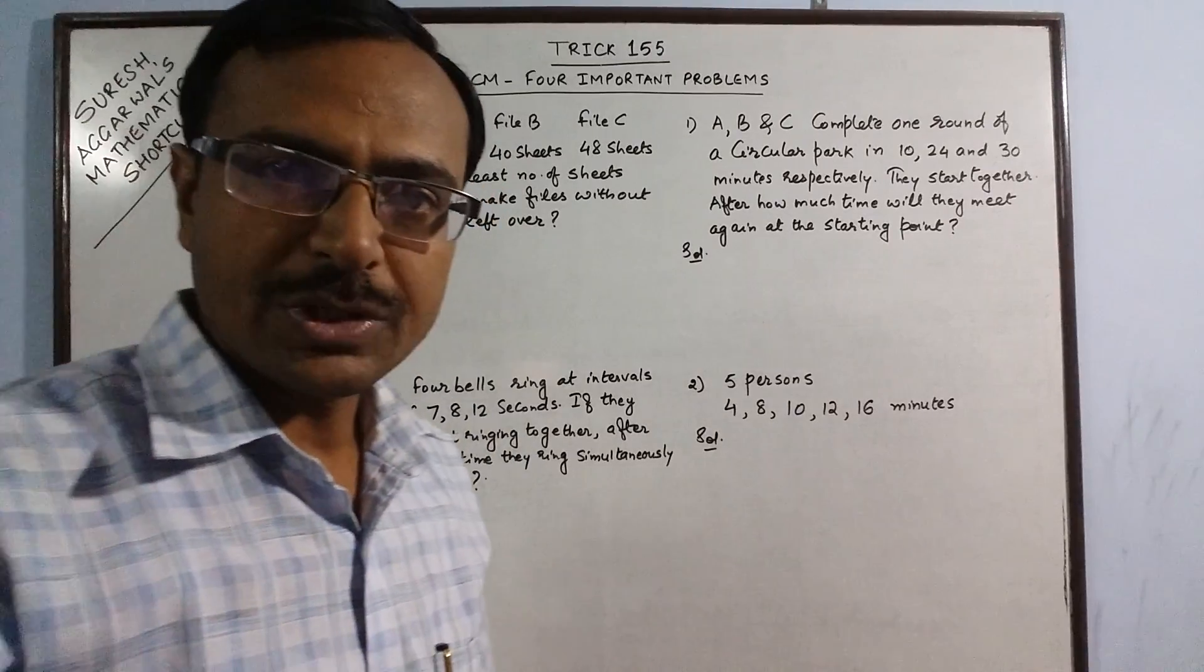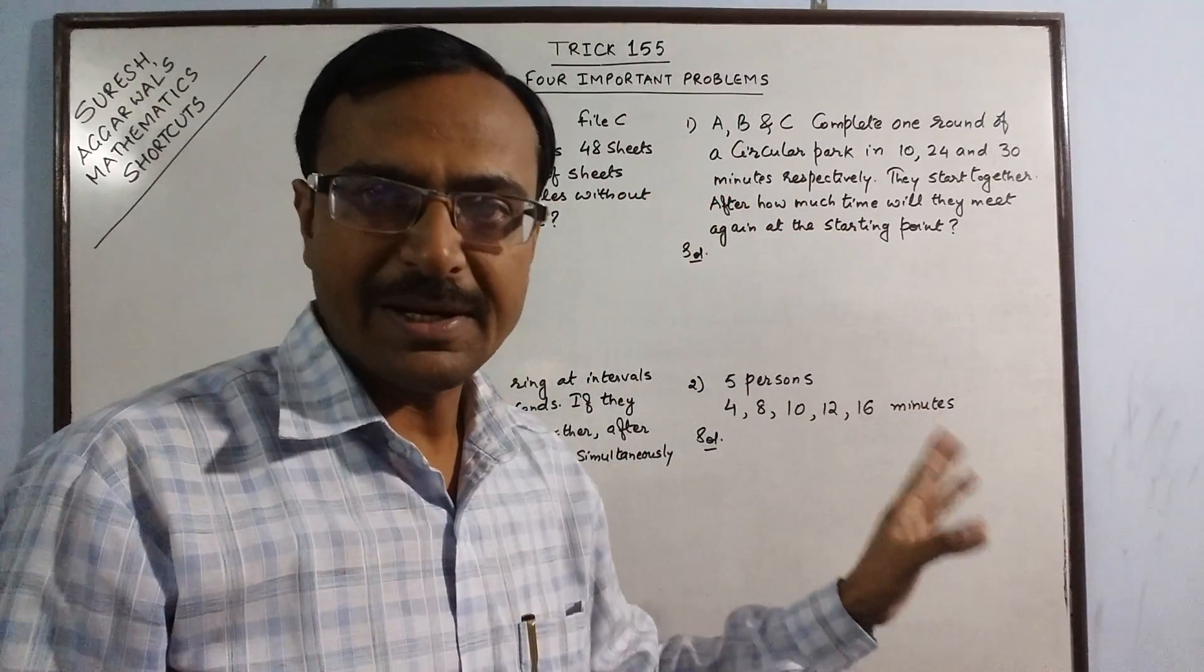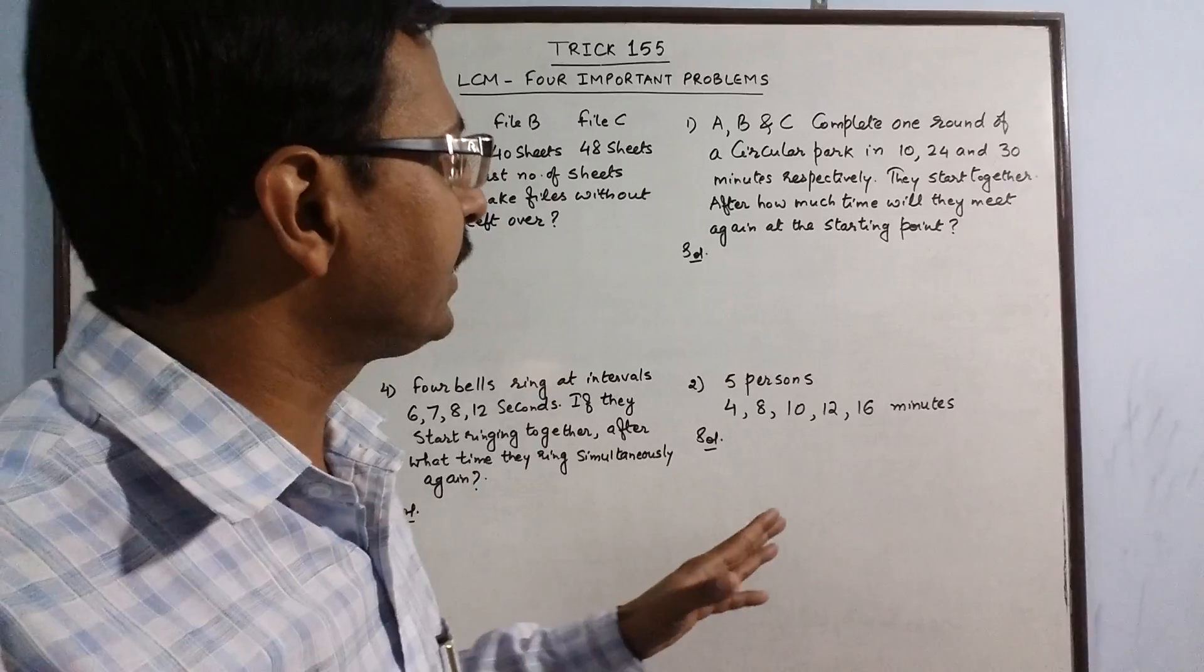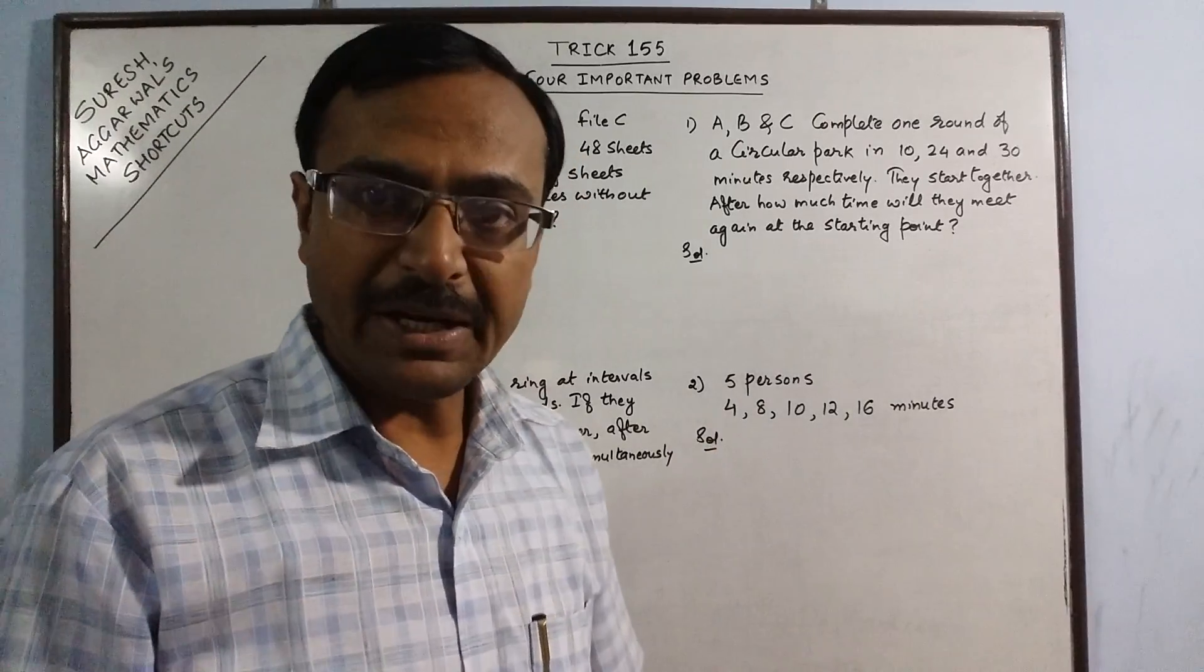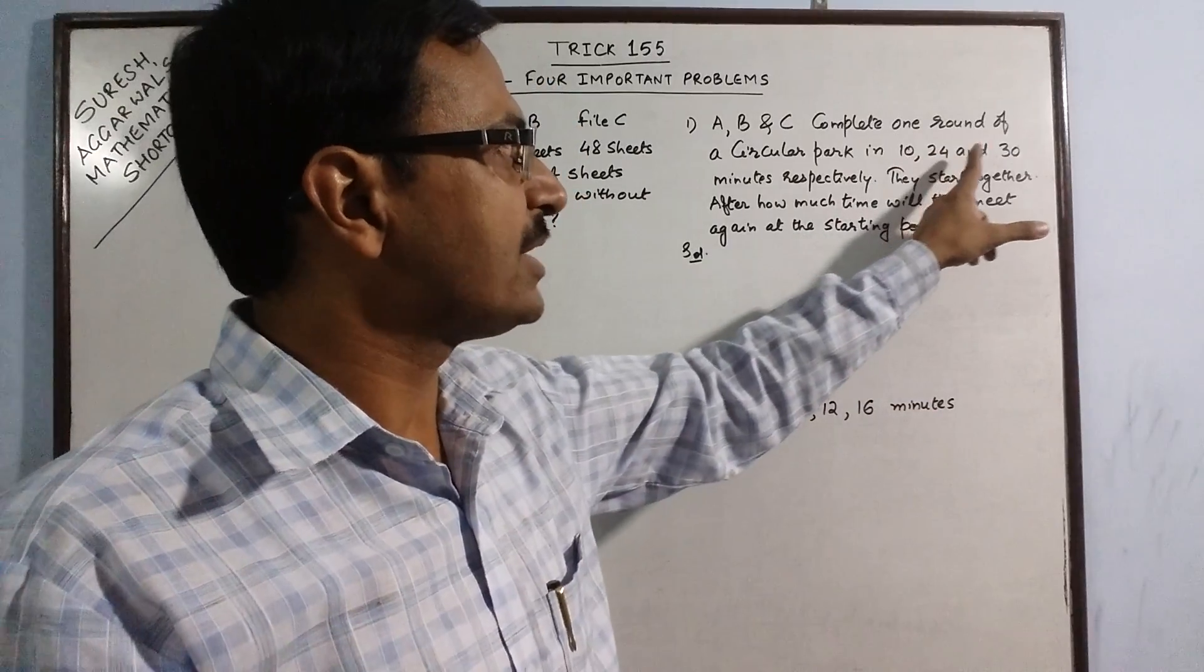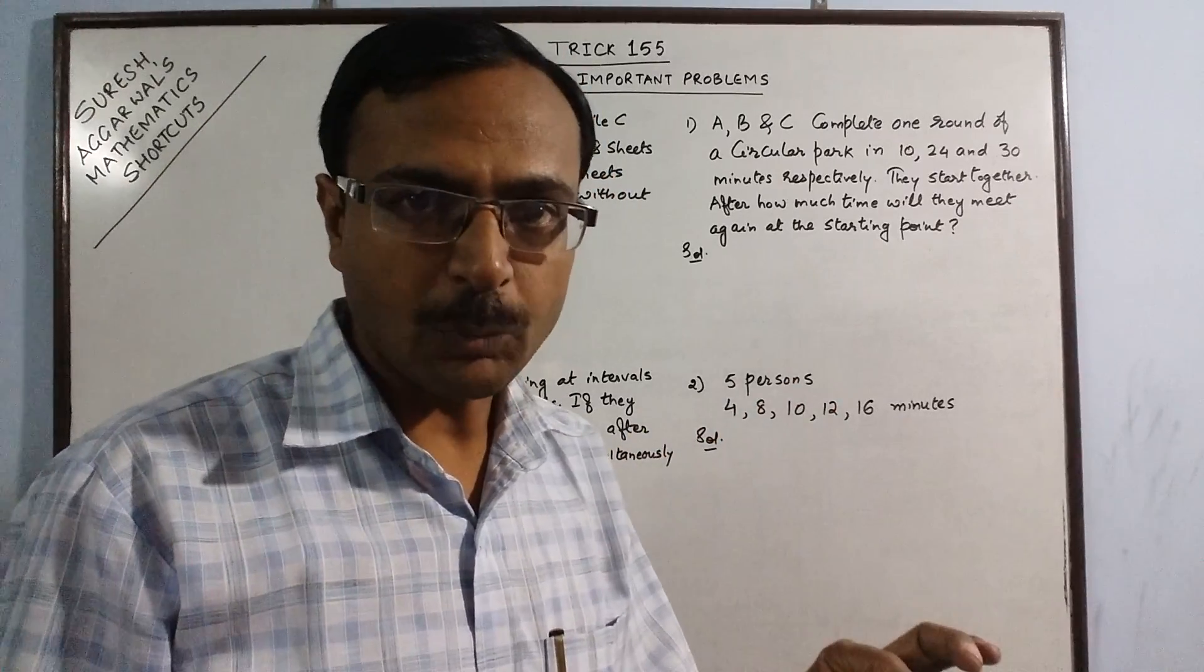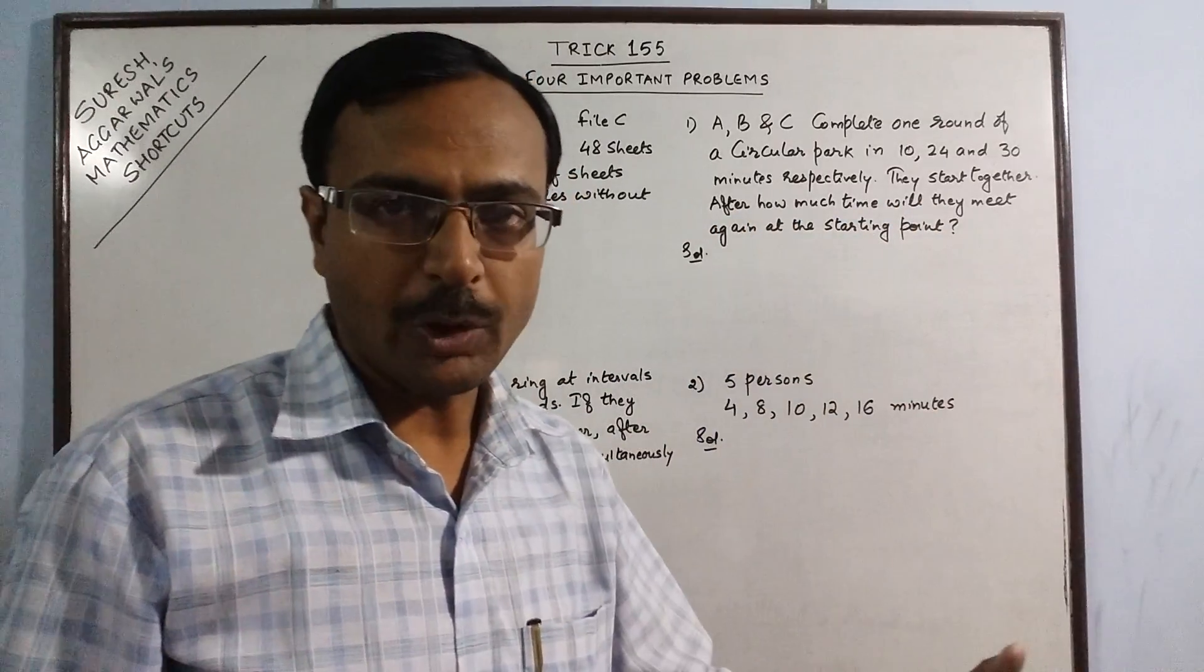The first problem I am going to take is there are three persons A, B, and C walking around a circular park. The time taken by the persons to complete one round of the circular park is given: 10 minutes, 24 minutes, and 30 minutes respectively. Now if they start together with a common starting point, after how much time will they meet again at the starting point?